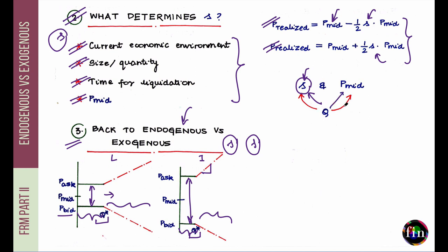In the case of endogenous liquidity, P_mid and S are dependent random variables — that dependence is controlled by Q. This makes models dealing with endogenous liquidity much harder to design and implement, since we cannot treat P_mid and S independently.